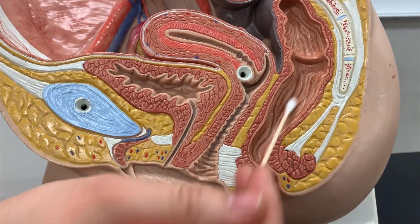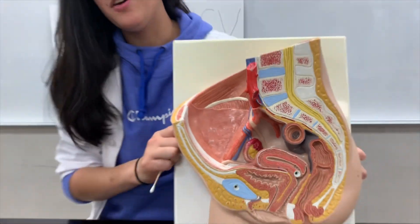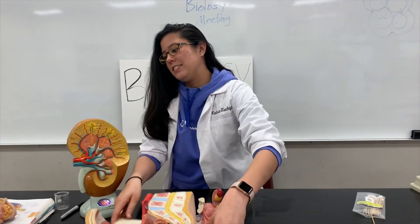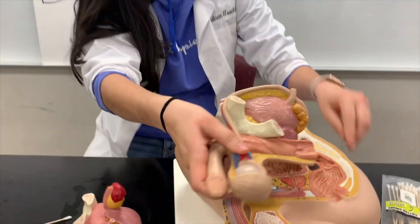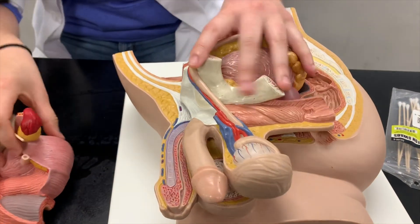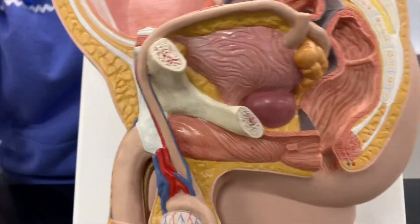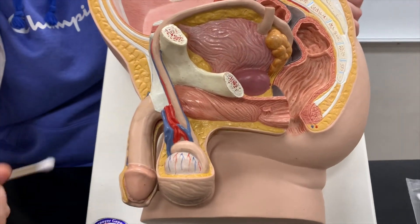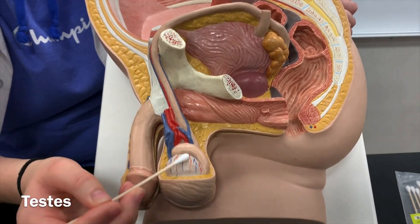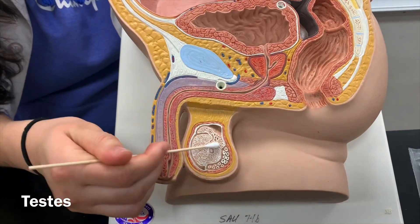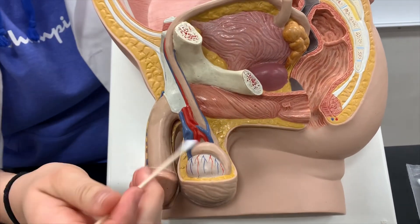Your rectum is here in the back, and that should cover it on this model. Moving on to the male model — here's your male pelvis. A few things you want to know on the outside structure: you can see your testes down here, and if you open it up, your testes are right here on the outer structure.